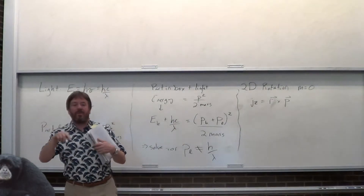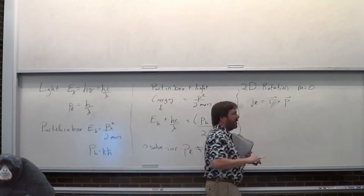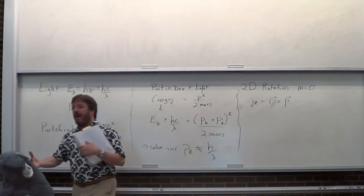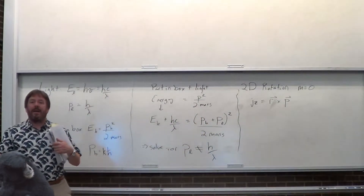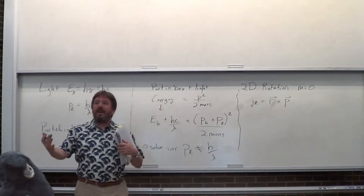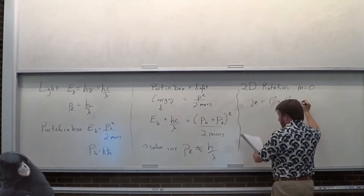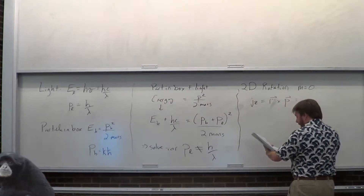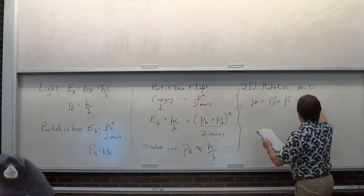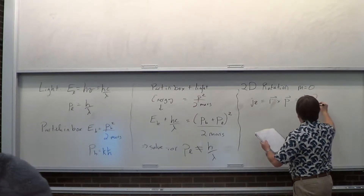You can work through all the vector terms — momentum is the derivative of x plus the derivative of y — and convert that to r, theta, and phi. It is hideous, by the way. But the answer ends up being hbar over i times the derivative of the angle.